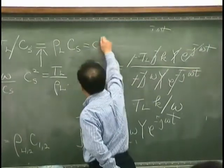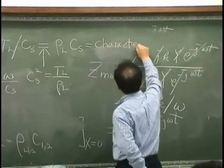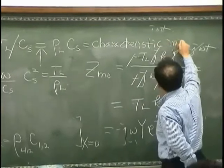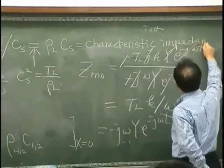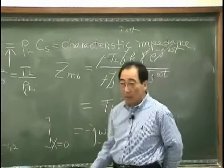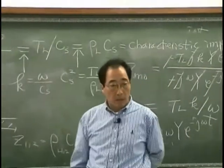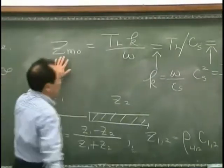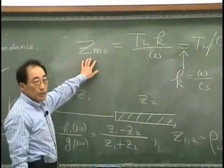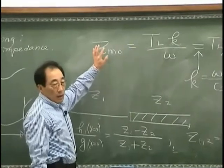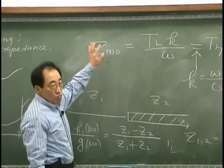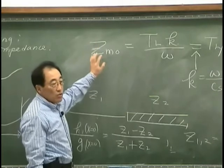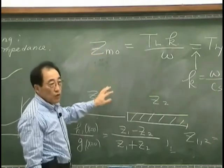This is characteristic impedance. Let's go back to the physical meaning of driving point impedance.